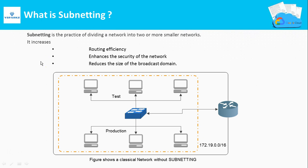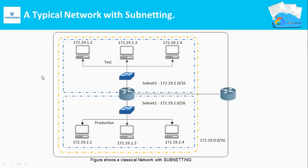What is subnetting? Subnetting means subdividing a network into multiple smaller networks. The benefits include routing efficiency, enhanced security, and reduced broadcast domain risk. Consider a network 17.19.0.0 having machines for both test and production environments. In real-time scenarios you have thousands of machines where management complexity is high within a single network domain. Dividing the network into subnets — subdivided networks — reduces complexity and management of troubleshooting.